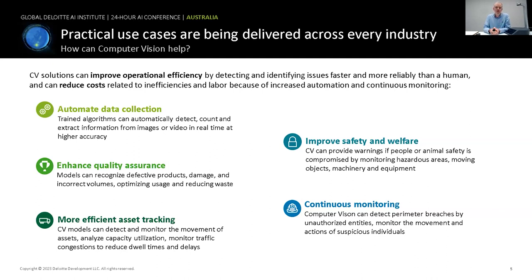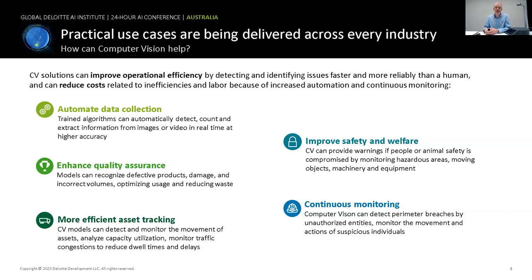There are so many areas computer vision can help in — whether it's automating data collection by automatically doing counts or extracting information from images or videos; detecting defects on a production line and taking action on those; asset tracking such as monitoring traffic movement; safety applications like checking whether people in a warehouse are wearing hard hats and gloves, or whether animals are being looked after in a supply chain. And going back to that stat about 99% of videos never looked at — continuous monitoring allows computer vision to always watch video and extract information, whether it's perimeter breaches or unauthorised actions.